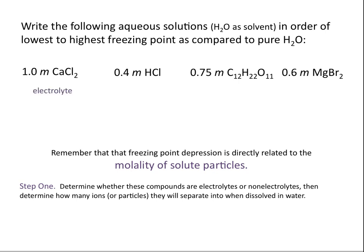The first thing to do is determine whether these compounds will ionize in water — whether they're electrolytes or non-electrolytes. Calcium chloride is an ionic compound; one way to identify that is seeing that it's composed of a metal and a non-metal. When this compound dissolves, for each mole of calcium chloride you get one mole of calcium ions and two moles of chloride ions. So a 1 molal solution of calcium chloride gives 1 molal calcium ions plus 2 molal chloride ions — an effective concentration of 3 molal particles.